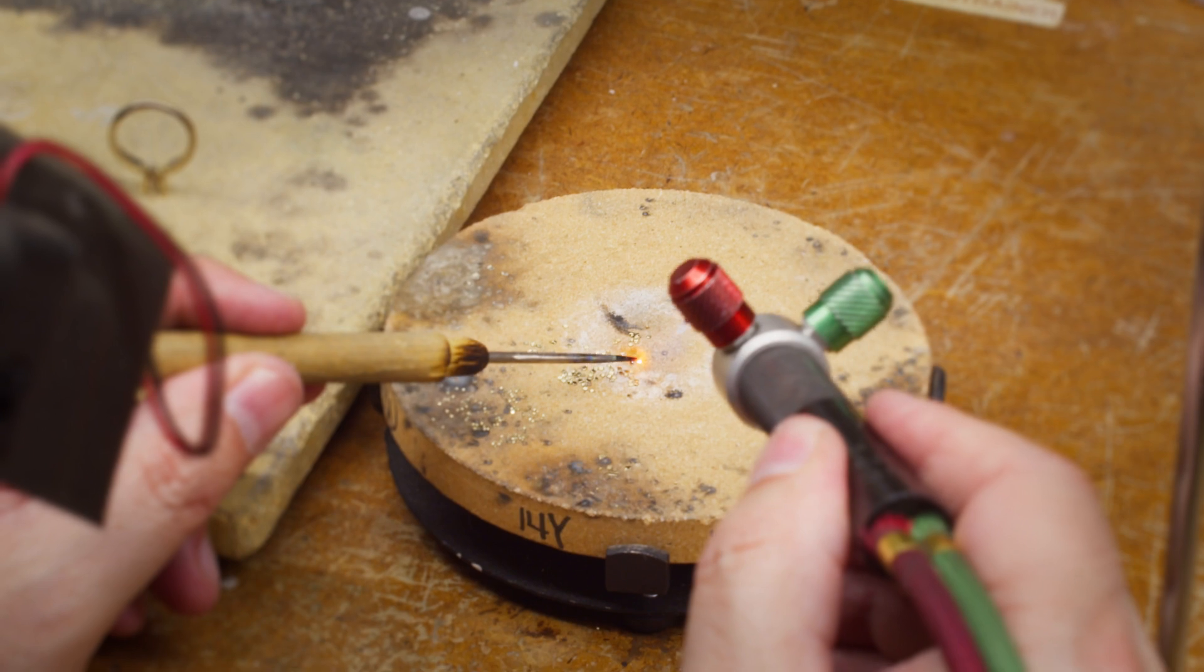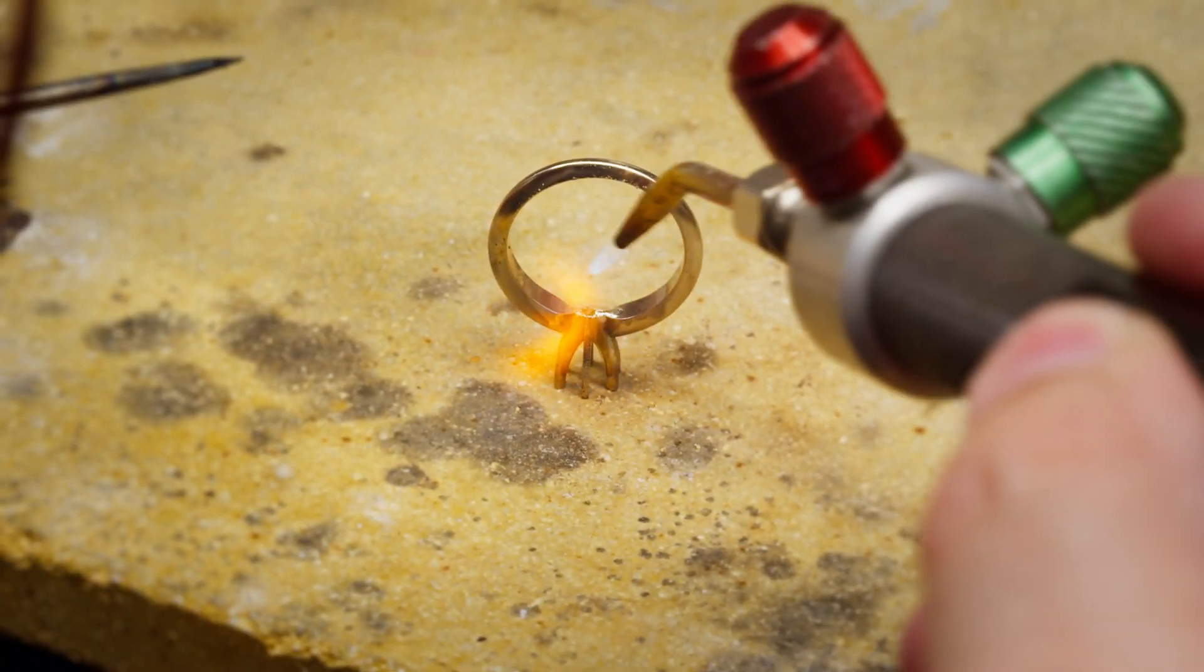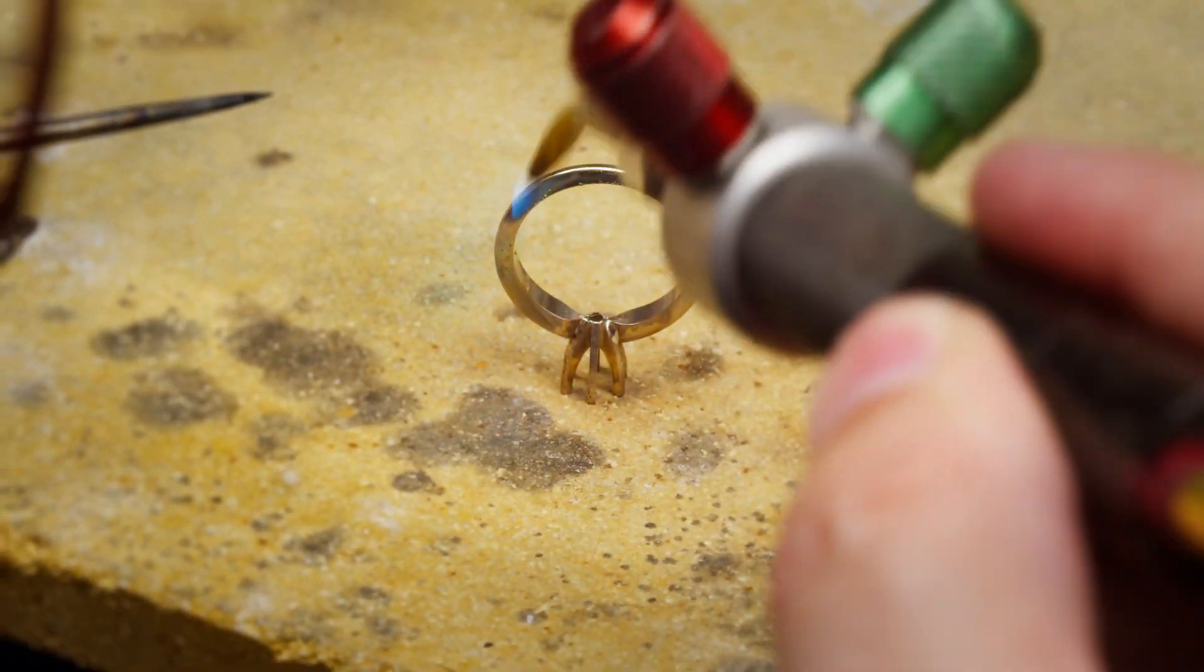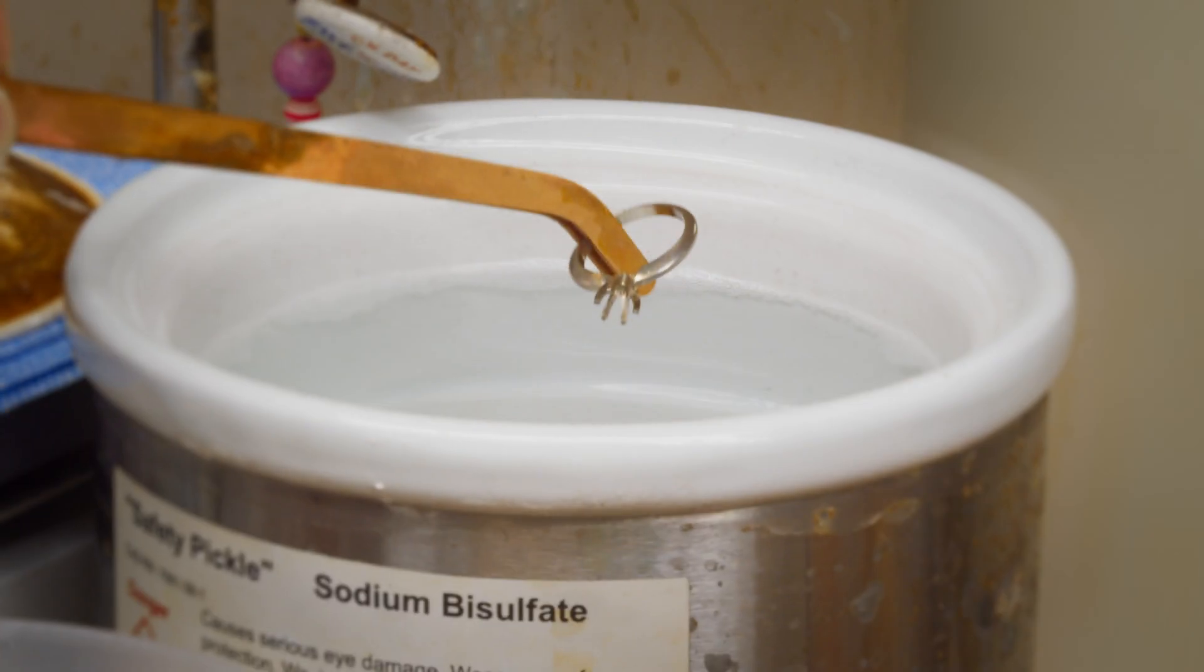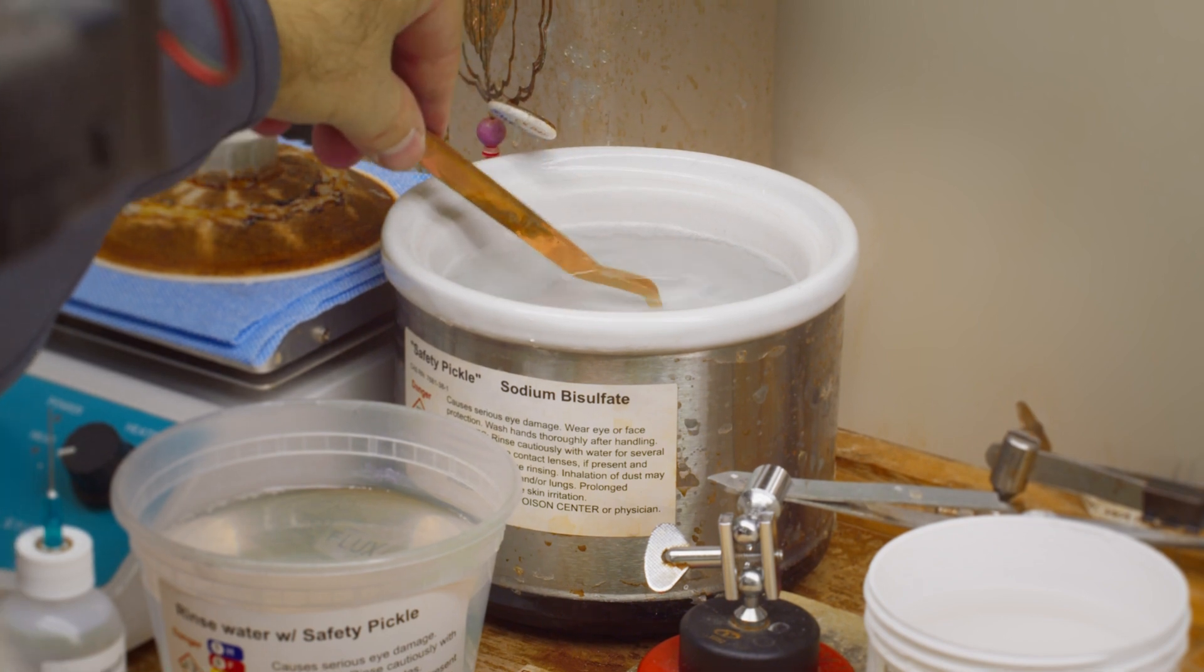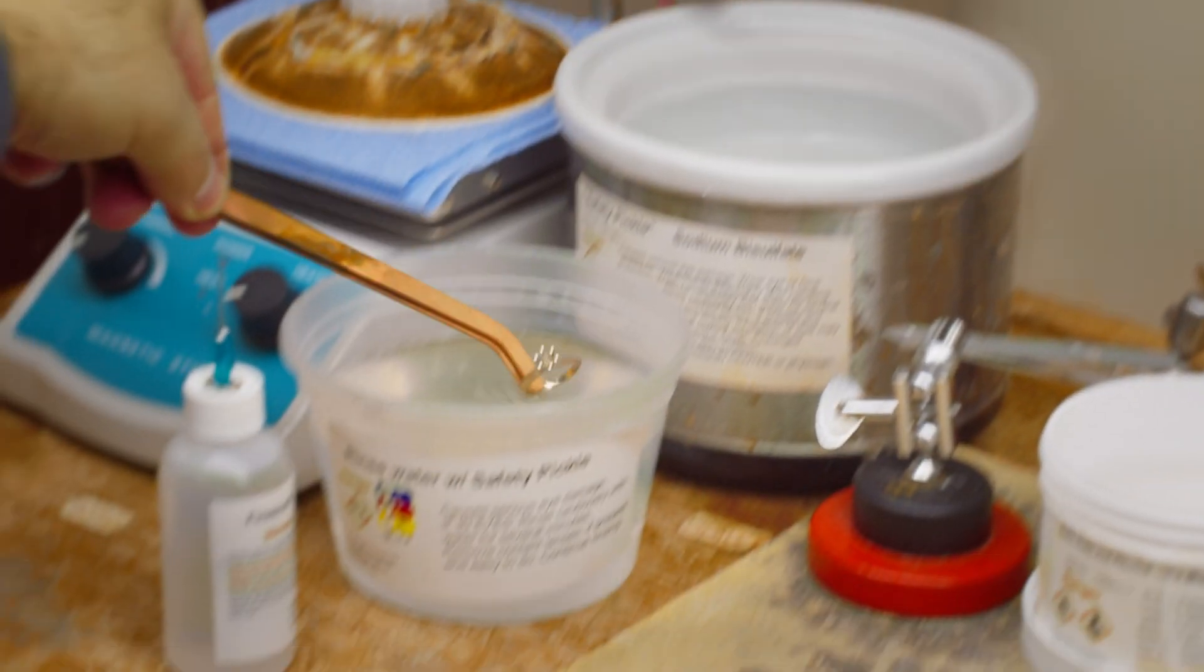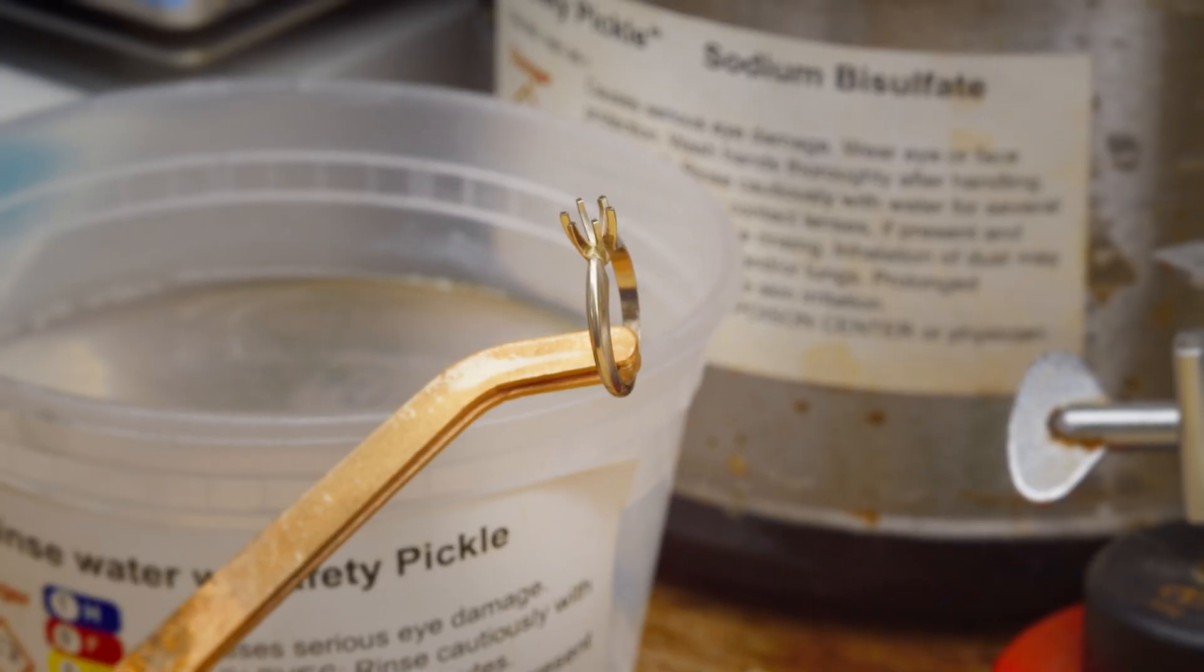Pick up two more pieces. Place it in the center of both of those. Flow it with equal heat everywhere. Then use my copper tongs and put it in the pickle solution. Wait about 15 seconds. That'll take off most of the boric and alcohol crystallization and also stop it from oxidizing. There it is.